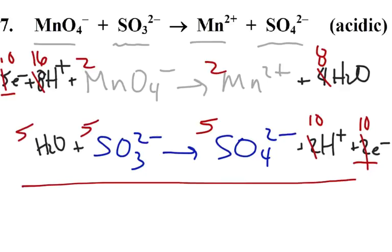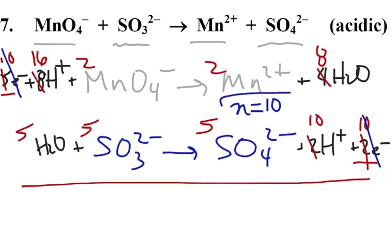We're going to put these two equations together. We want to cancel out the ten electrons. We mentioned in class that if somebody asks what's the value of n, we would say n in this case is ten - that's the number of moles of electrons that got canceled.